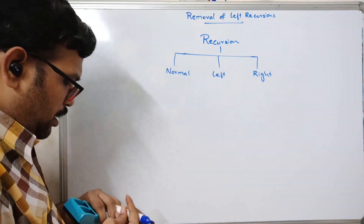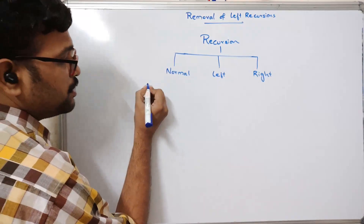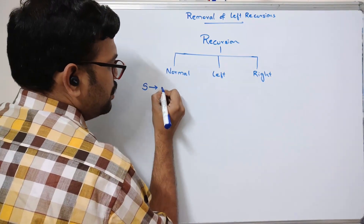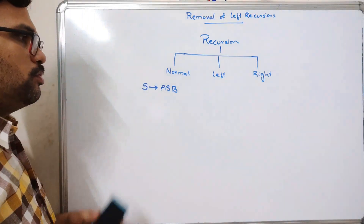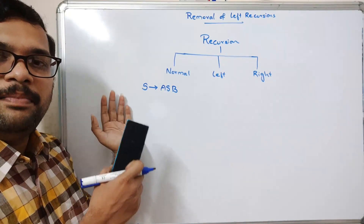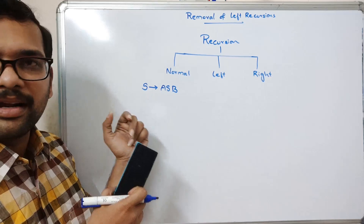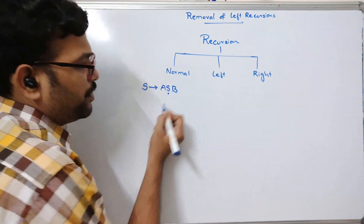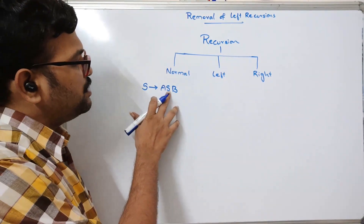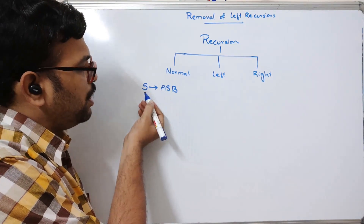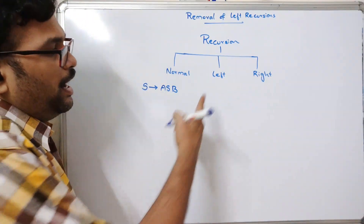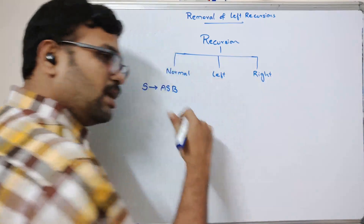Coming to normal recursion: if a production is in the form A → ...A..., whatever the non-terminal is on the left hand side of the production is repeated on the right hand side, we call it a normal recursion. This is similar to how recursion in programming means calling the same function itself.